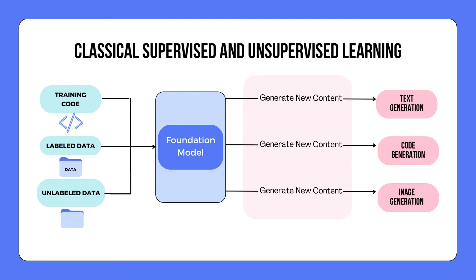The generative AI method can work with training code, labeled data, and unlabeled data of all kinds to construct what we call a foundation model. This foundation model can then produce new content such as text, code, images, audio, video, and so on. Generative AI's power lies in its ability to ingest diverse data types, including unlabeled data, to build models that generate fresh content, which extends beyond traditional models' capabilities.